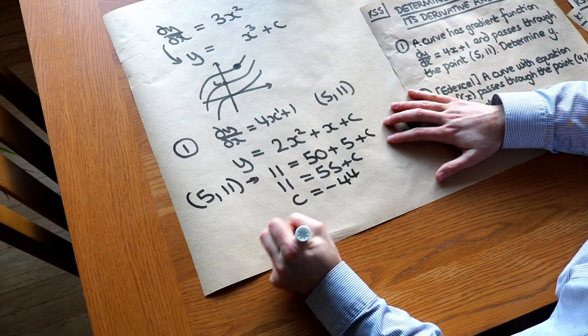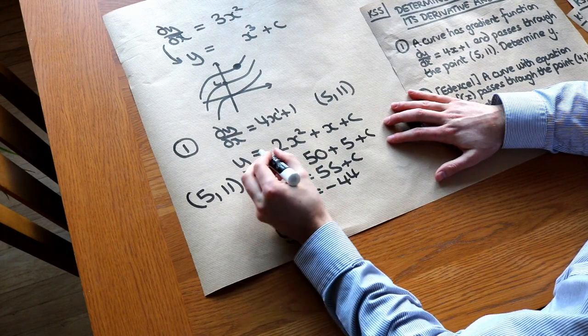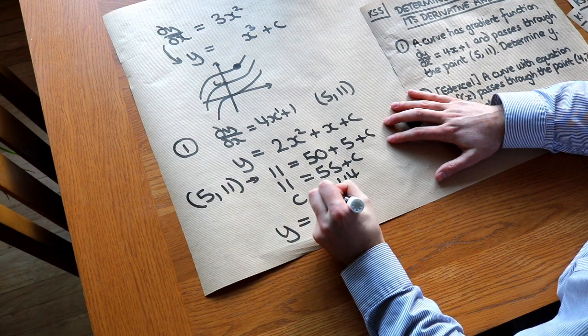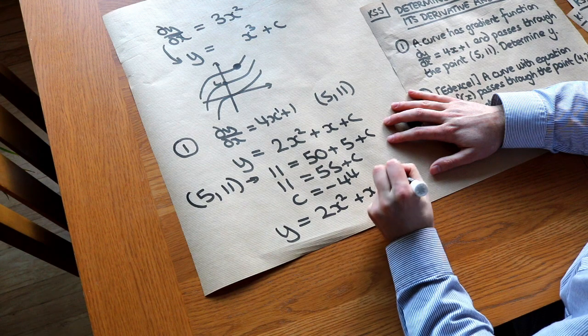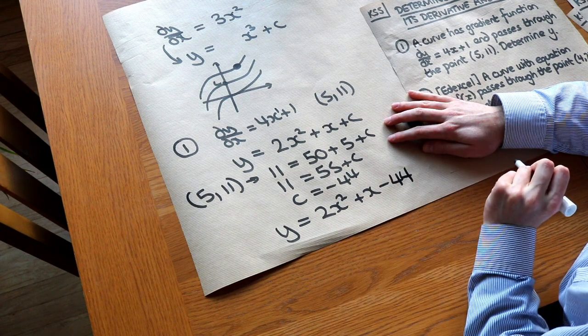So that means we now have the full equation of the original line. It's y = 2x² + x, and then plus the c, which is -44. And that is the answer.